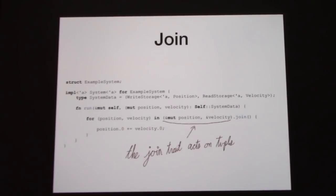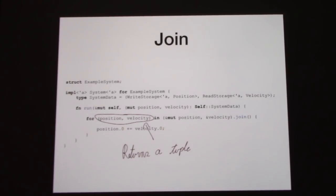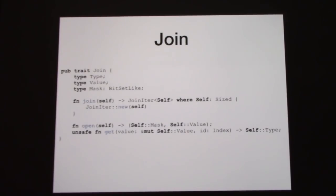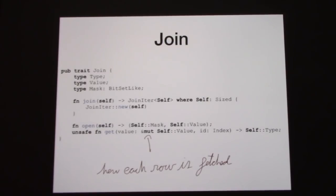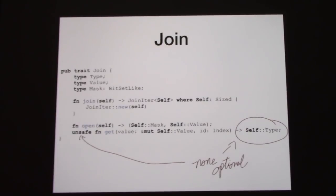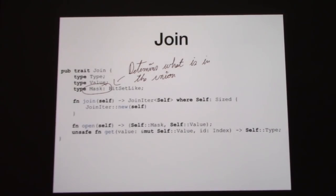The join trait takes a tuple, so we'll see some of that ugliness again, and it returns a tuple of the same shape. If you pass in a position vector, you get a position vector out. If you pass in a mutable reference, you get a mutable reference out for the internal value — if you have write access, obviously. The actual user-facing part is just the join method; everything else is internal. Each row that is fetched is done through an unsafe function for performance optimization reasons — it returns a non-optional value, which isn't legal for a hash map for example, so we basically assume the mask has done its job.